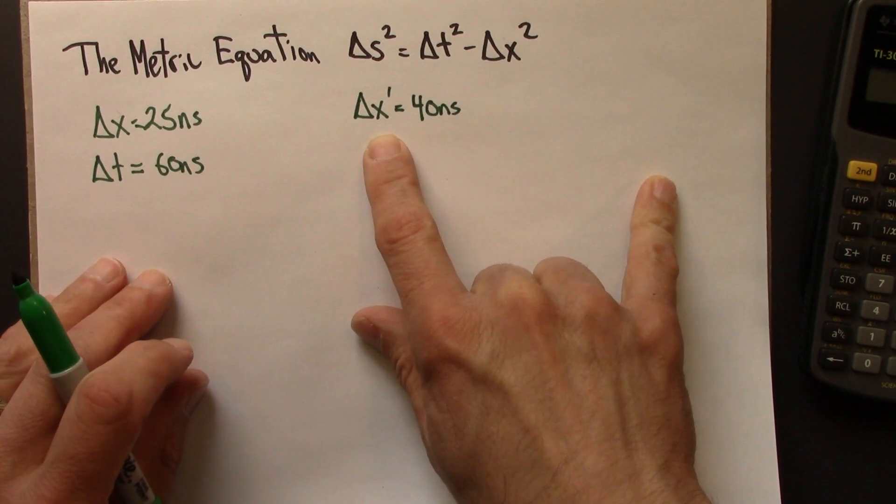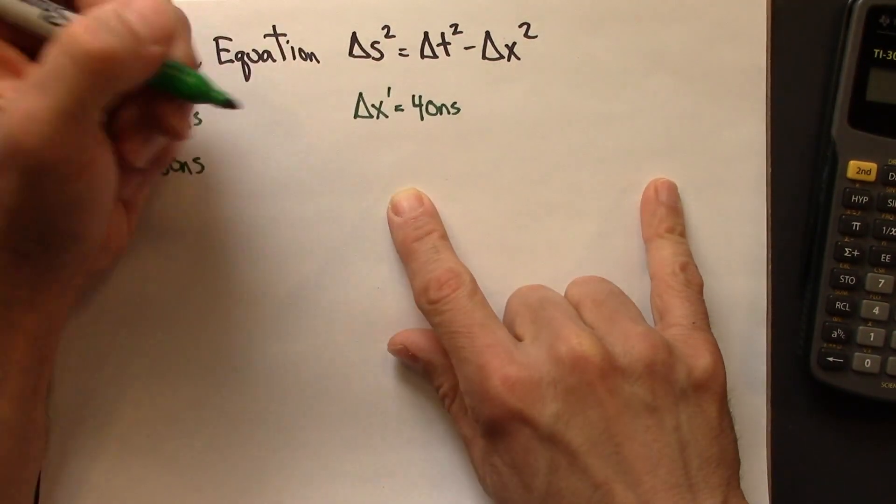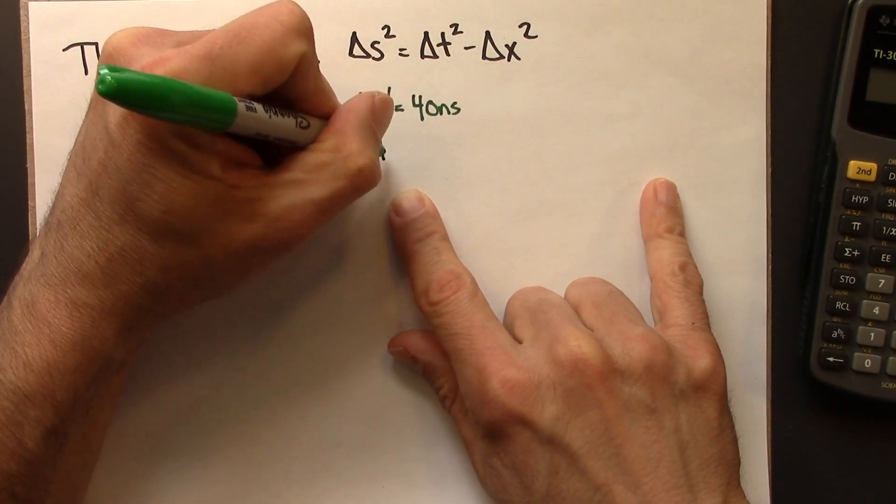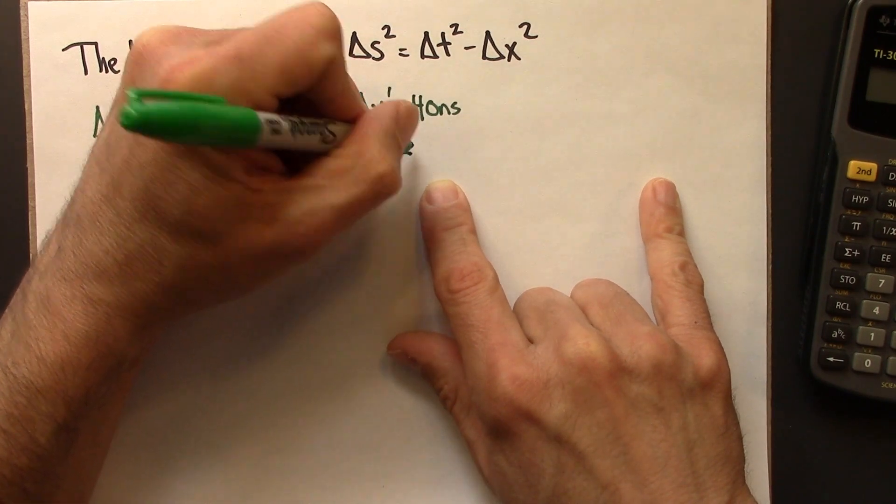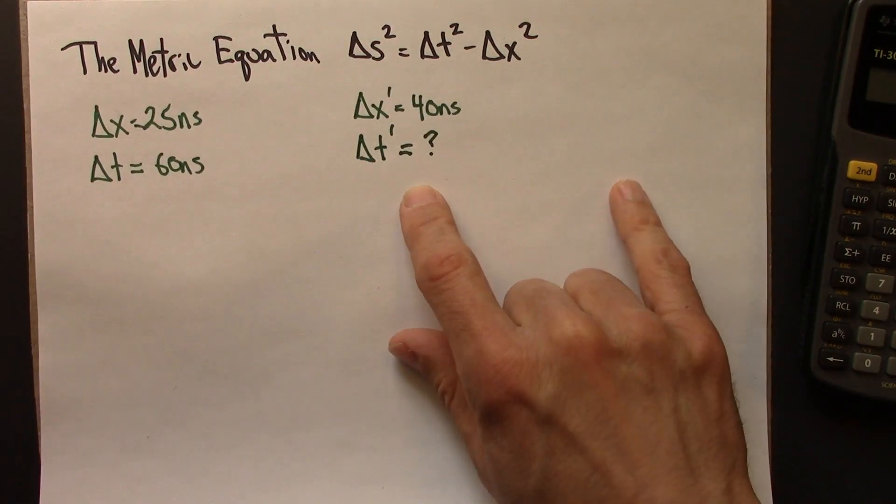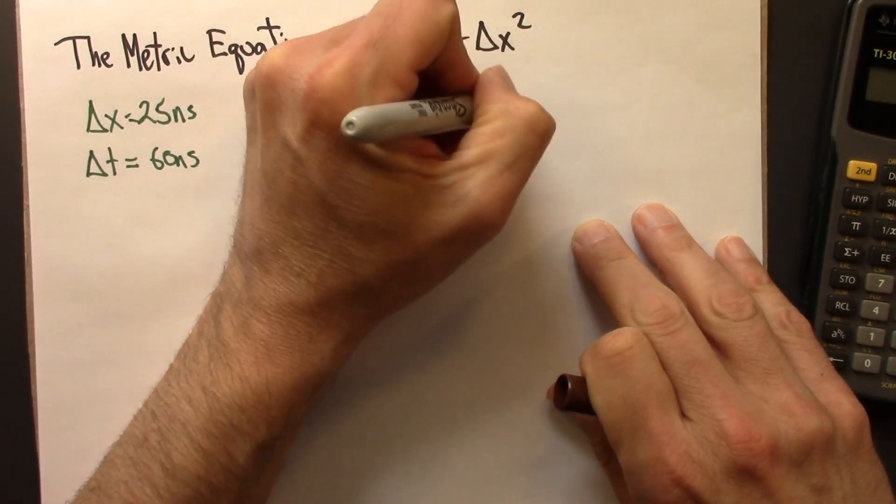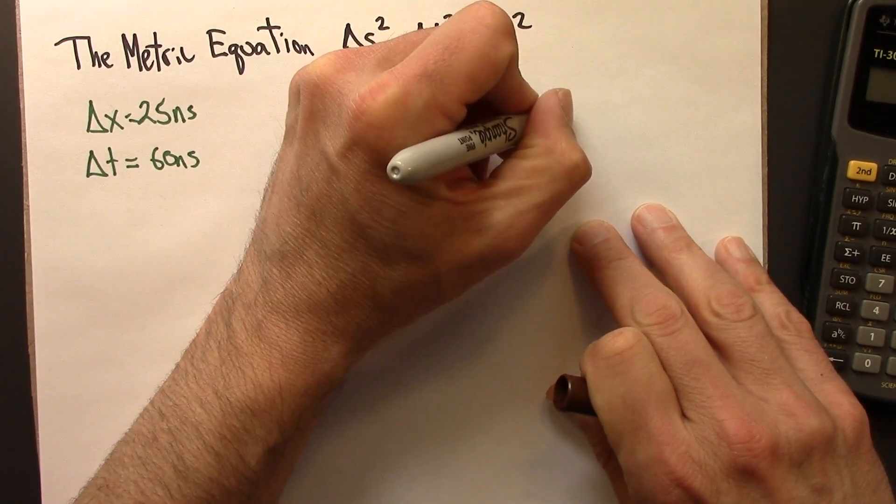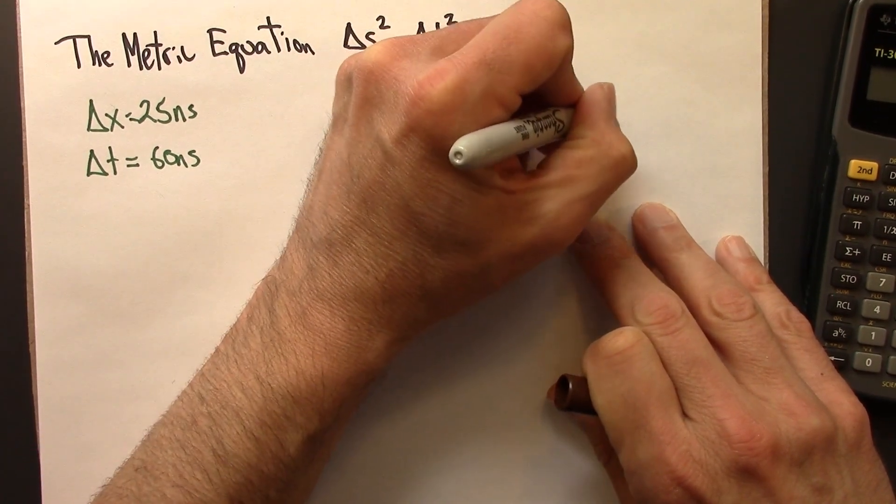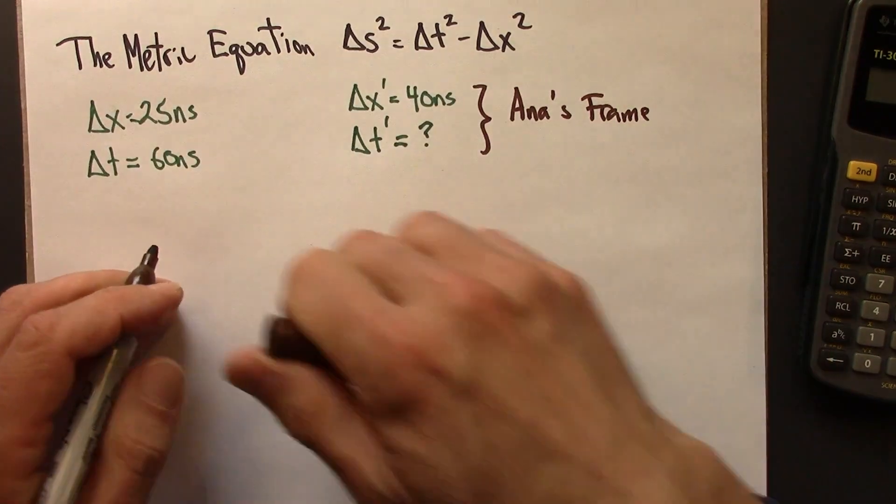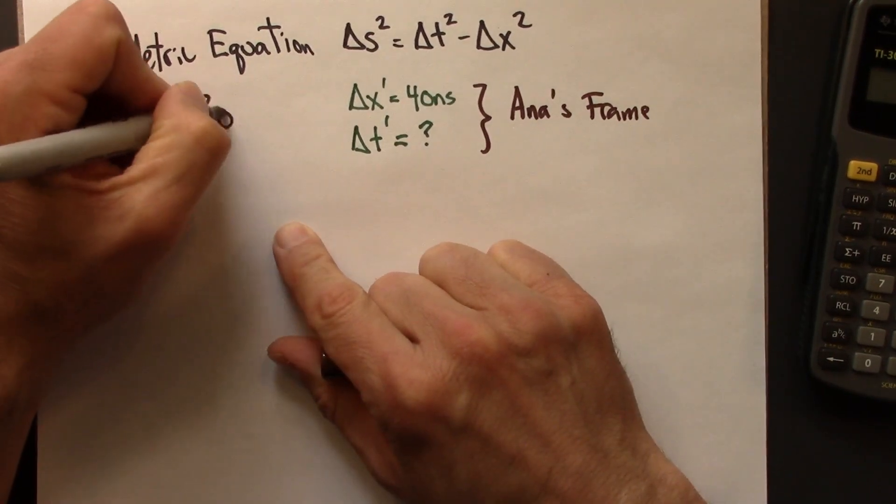So I'm using x prime for Anastasia's frame, and we want to know what t prime is. So I'll put a question mark here, because that's what we're trying to figure out. And maybe I'll label this just as Anna's frame, and then this is our frame.